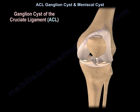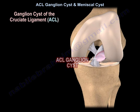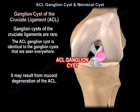The first one we are talking about is the ganglion cyst of the cruciate ligament. These ganglion cysts of the cruciate ligaments are rare. The ACL ganglion cyst is identical to the ganglion cyst seen everywhere, and it may result from mucoid degeneration of the ACL.